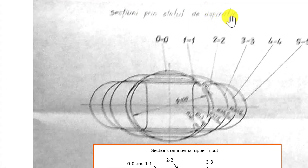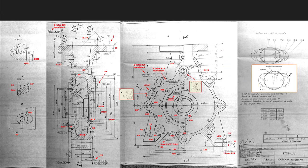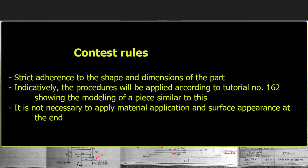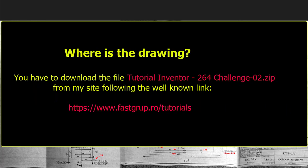You ignore Romanian, of course. The contest rules: strict adherence to the shape and dimensions of the part. Small radii not dimensioned in the drawing will be radius 2, indicatively. Procedures will be applied according to tutorial number 162. It is not necessary to apply material application and surface appearance. You have to download the file with the name of this tutorial from my site following the well-known link.